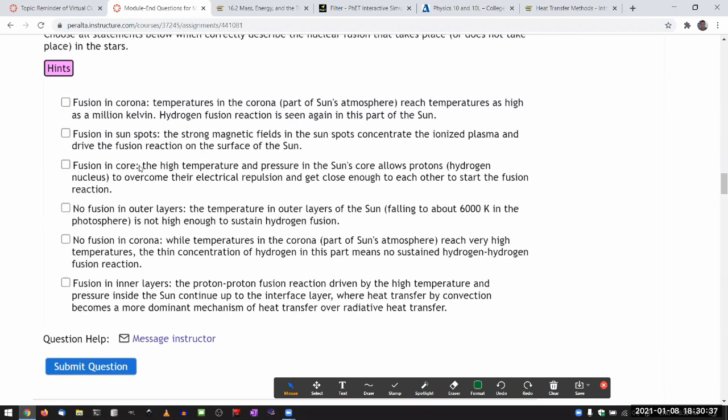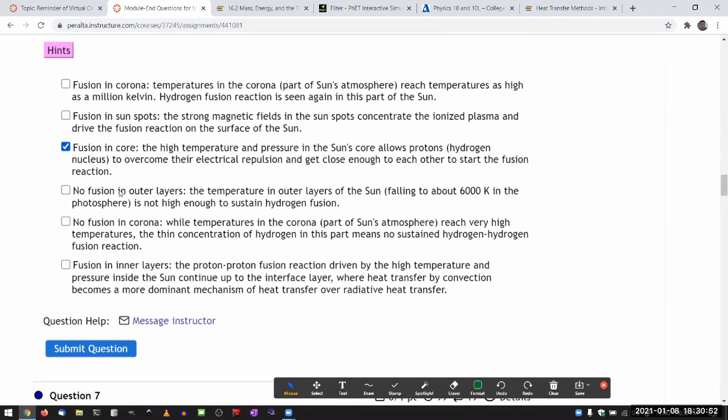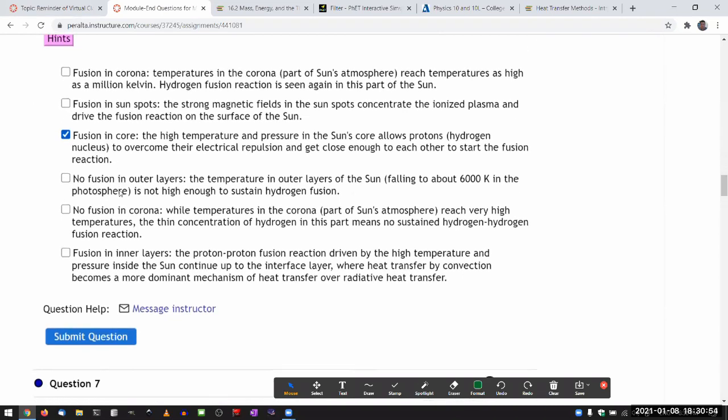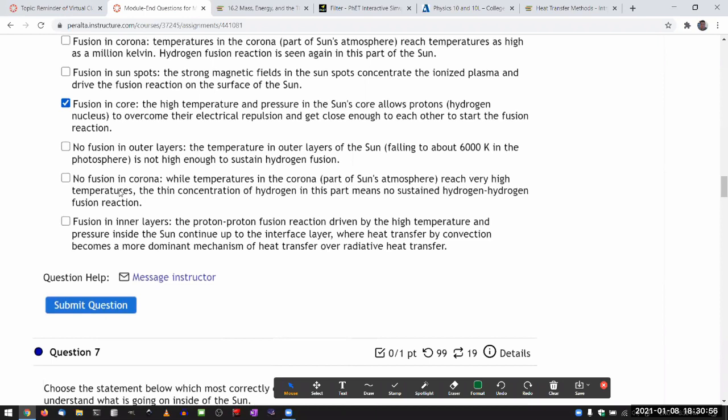Fusion in core: the high temperature and pressure in the sun's core allows protons to overcome their electrical repulsion and get close to each other to start the fusion reaction. And that's the first step in the chain of reactions that needs to happen to form helium-4 at the end.